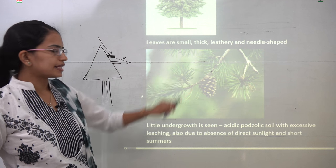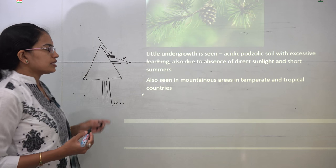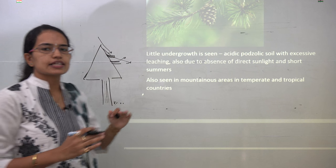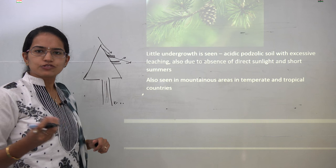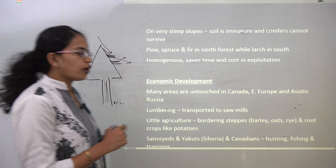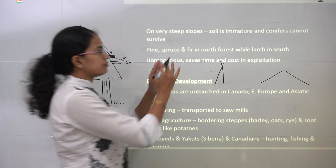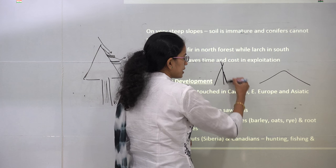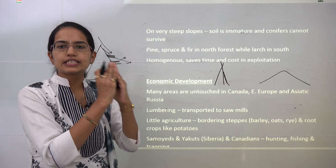Conifer leaves are small, needle-shaped, and leathery. Wherever conifer trees are seen, there is very little undergrowth, because the huge trees obstruct sunlight, leaving insufficient sunlight for underground vegetation. Only in the short summer agricultural season can some undergrowth be observed. Conifers are also common in mountain areas. However, on very steep slopes, conifers cannot survive because the soil is constantly being eroded and the immature soil cannot support coniferous trees.